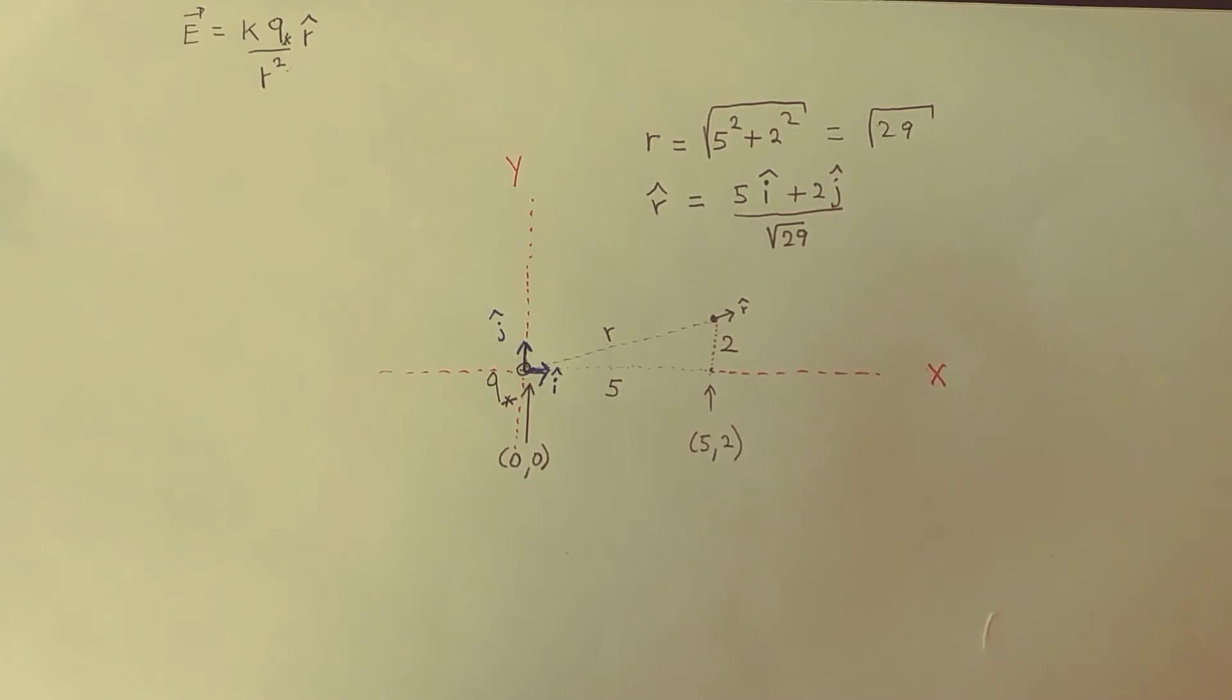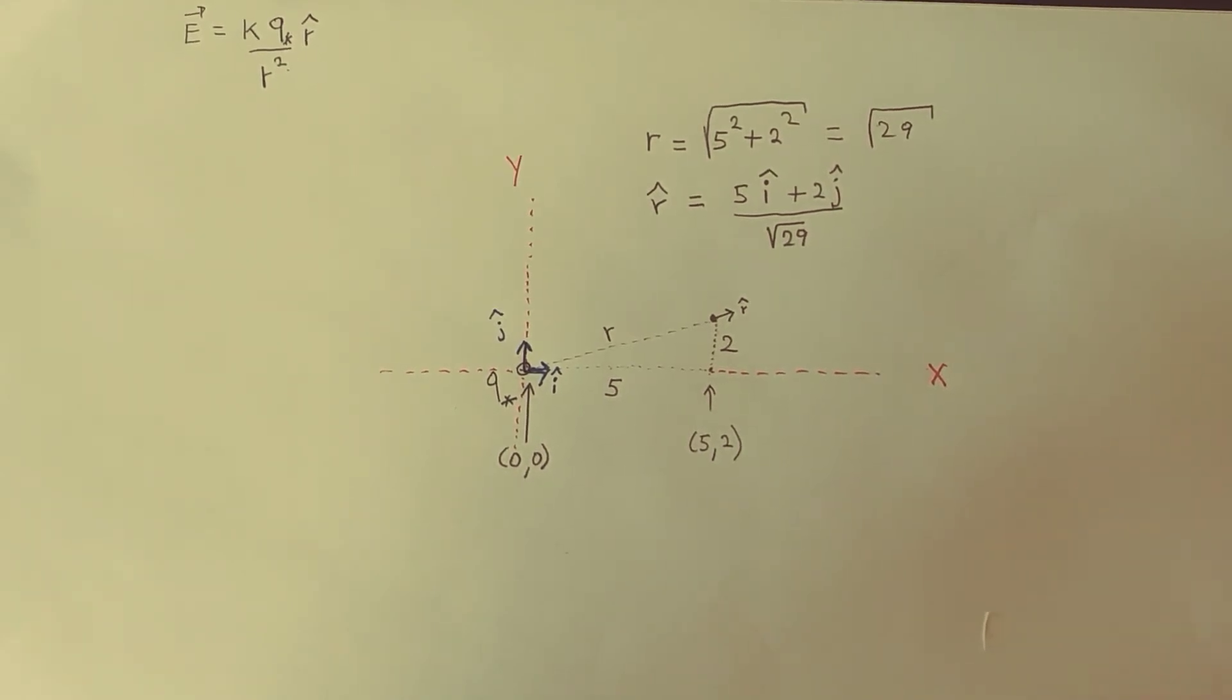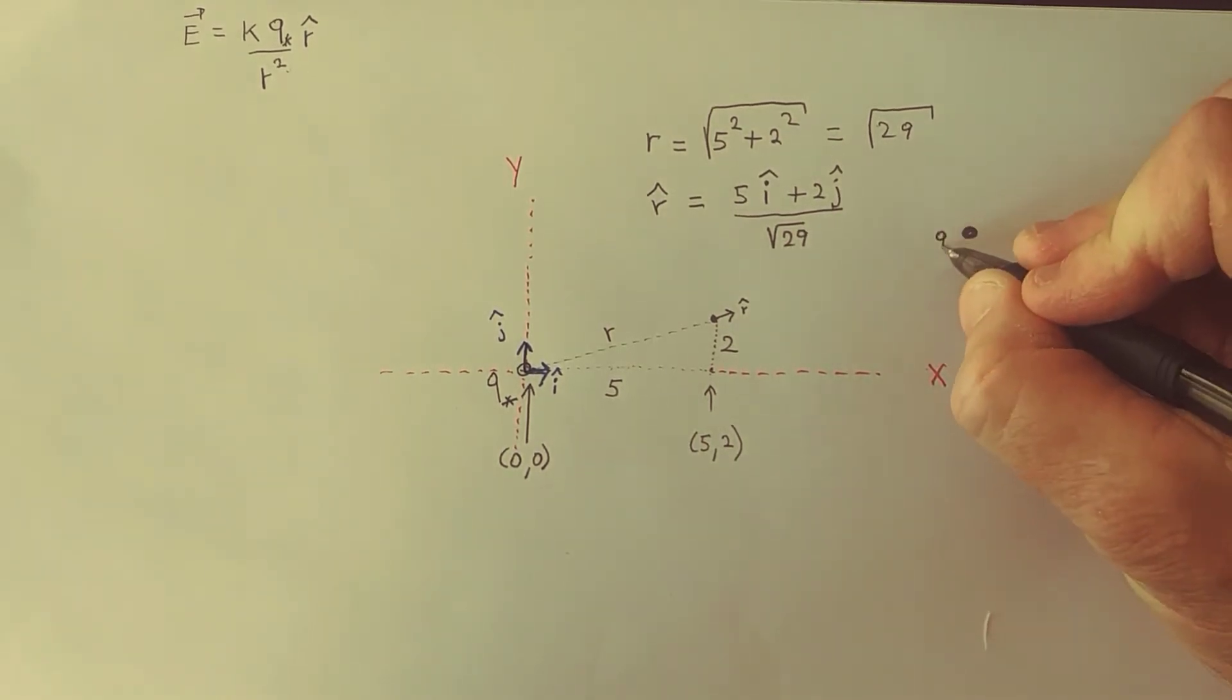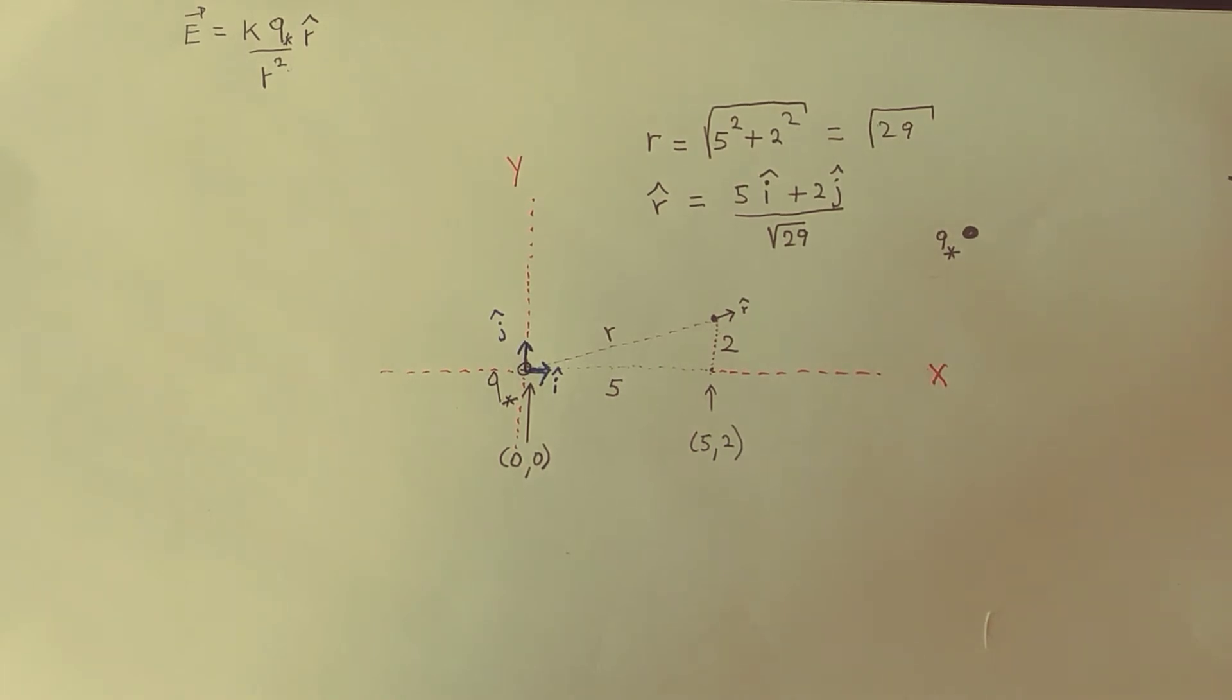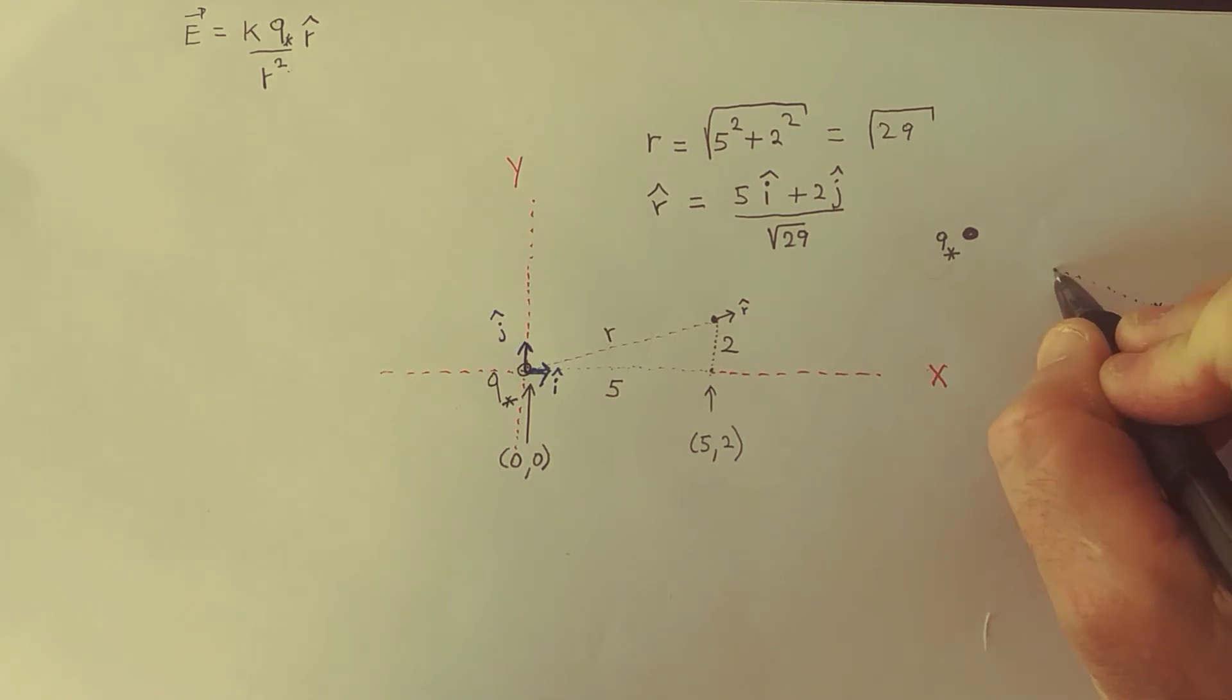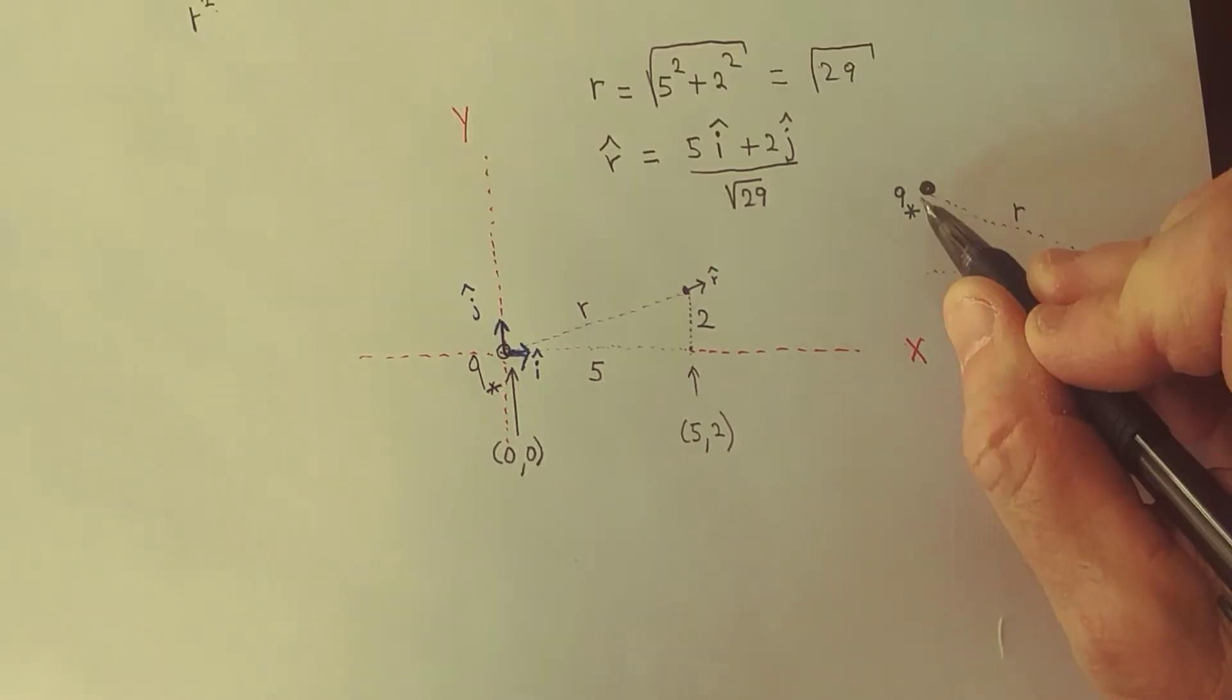But what if we move this particle from here? Let's say that we put the particle of charge Q star right here. And we want the electric field, let's say maybe over here, at this point over here. So there is a distance R from there to there. But there is a right triangle here given by the horizontal part and the vertical part.